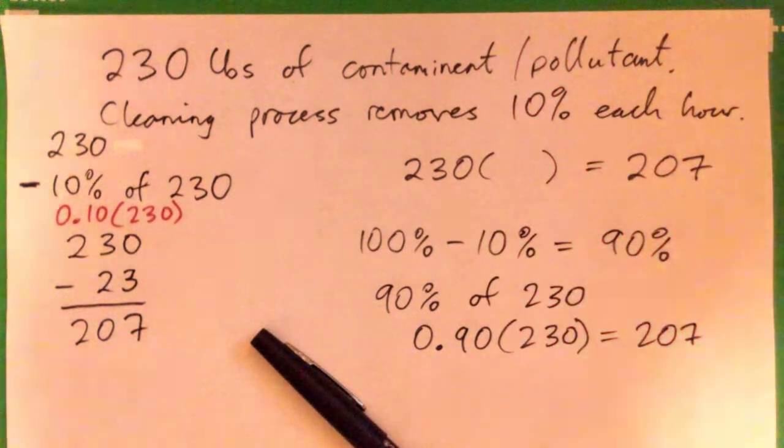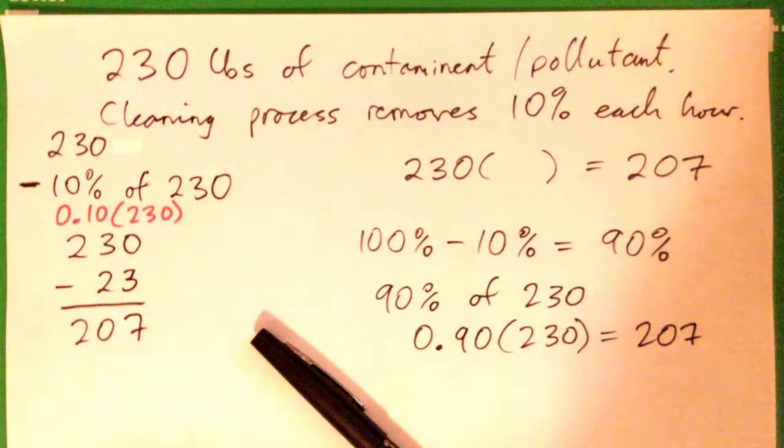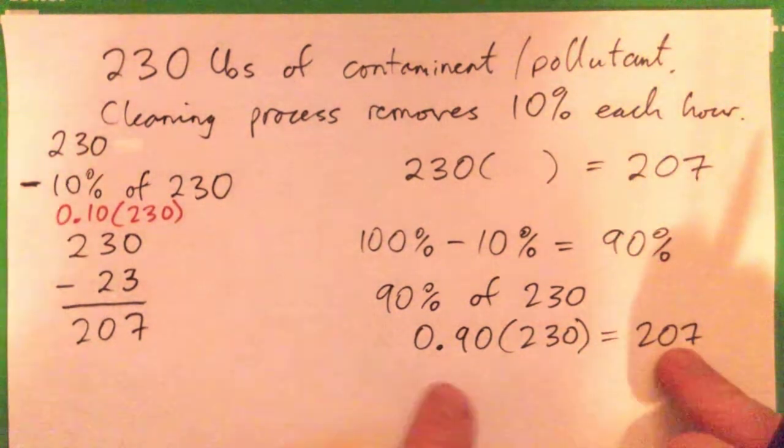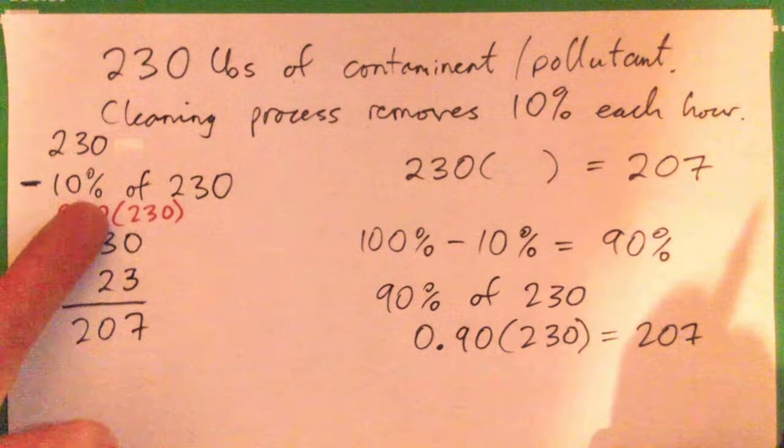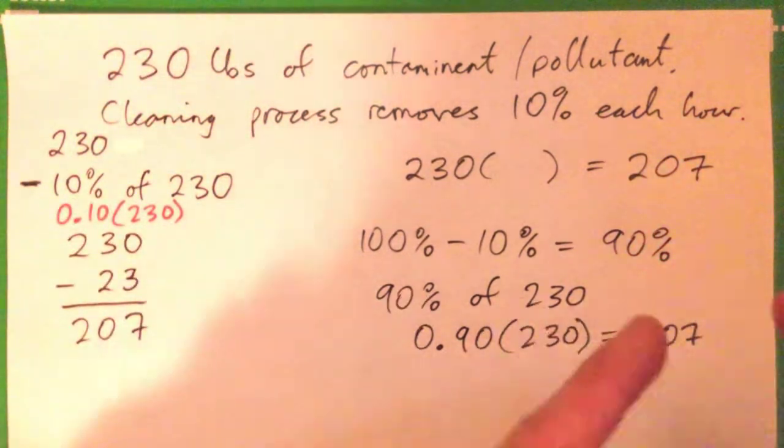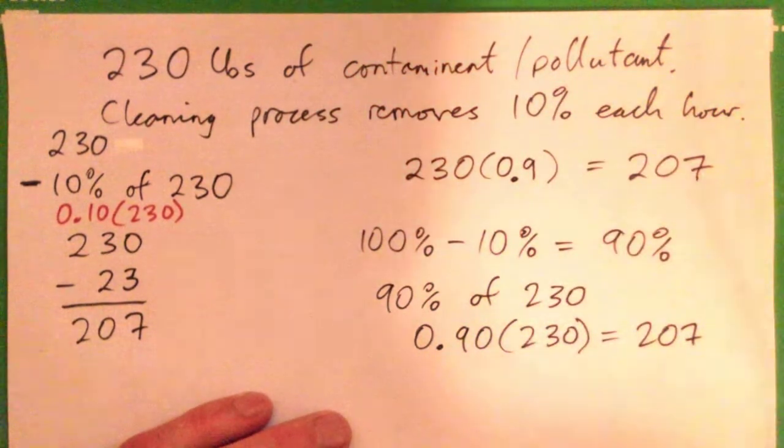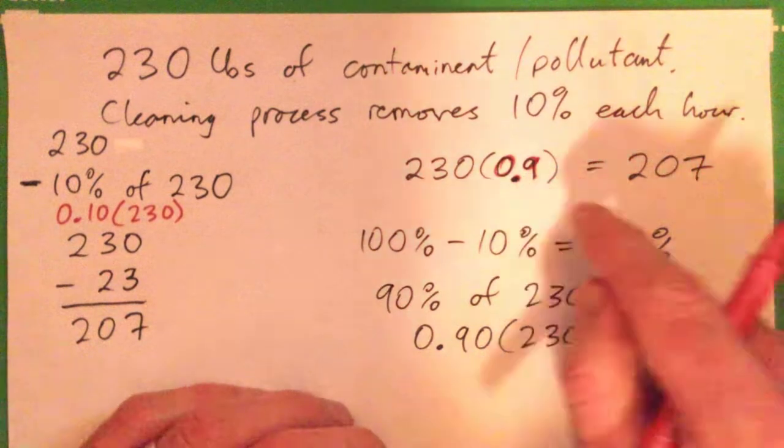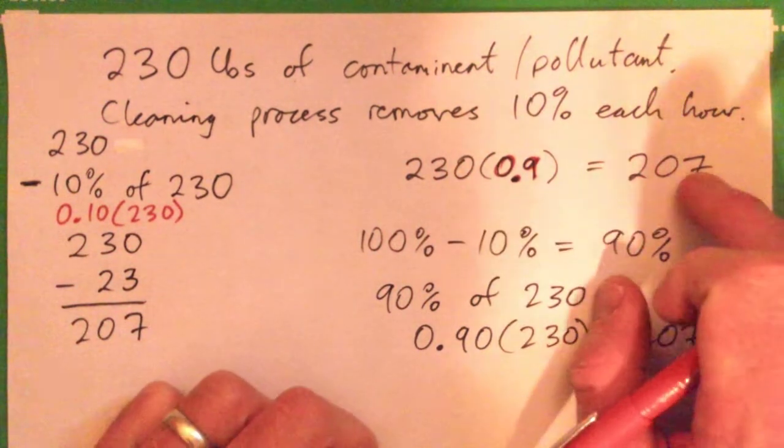So plug that in the calculator and we find that is indeed 207. The concept is subtracting 10% of something is the same thing as getting 90% of that thing. So the magic number was 0.9. If I multiply it by 0.9, that gets me what we have left after one hour. And that is so key.